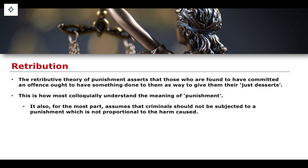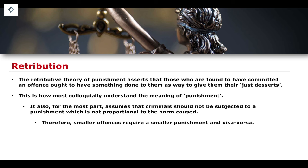Each of these theories informs the type of punishment applied to different offences. With deterrence, there is often a justification for quite significant punishments to try and stop others from doing the same offence. With rehabilitation, the type of punishment depends entirely on whether it reforms the person going through it. But with retribution, you look for proportionality — an eye for an eye — meaning you should be subjected to a kind of punishment proportional to the kind of harm you have committed. Smaller offences may require smaller punishments; larger offences require quite large punishments.